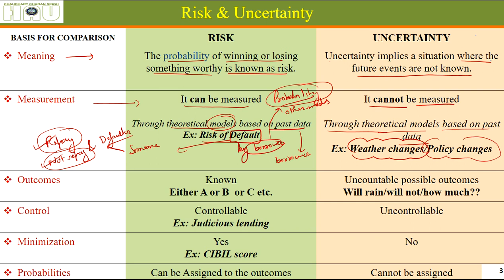Policy changes are another example of uncertainty. These are generally guided by current needs, and nobody can think of the future needs that will arise. So government policy changes can happen at any point in time and we cannot anticipate those changes in advance because they are based on needs.